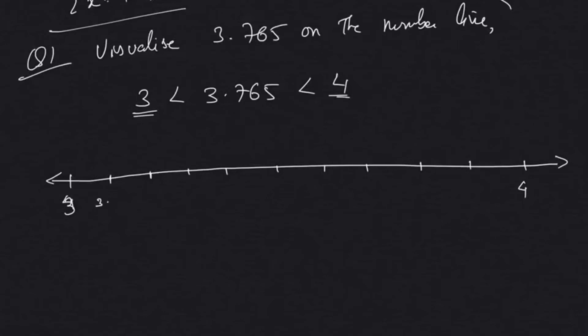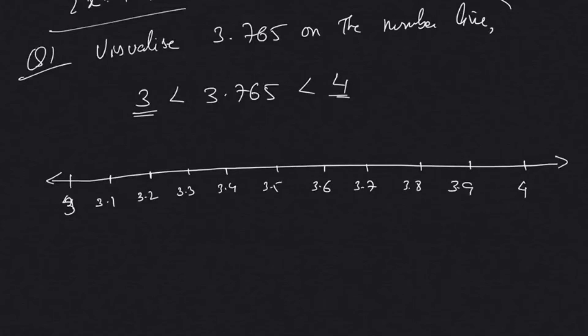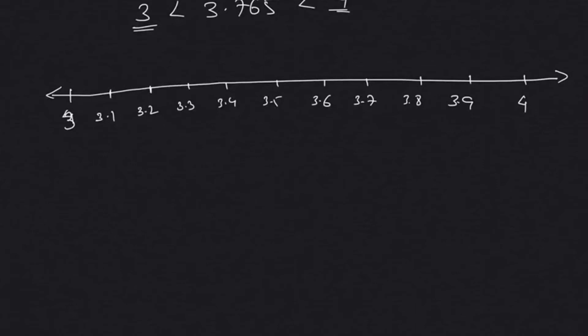So between 3 and 4, I will expand: 3.1, 3.2, 3.3, 3.4, 3.5, 3.6, 3.7, 3.8, 3.9, and 4. Now after that, we will continue to draw another line.